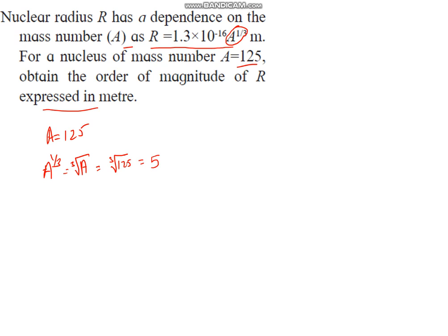Let us put it over here. So the radius will be 1.3 into 10 raised to minus 16 into 5. When we multiply this, 5 times 3 is 15, 1 carried up, 5 times 1 is 5 plus 1 is 6. So you got 6.5 into 10 raised to minus 16.